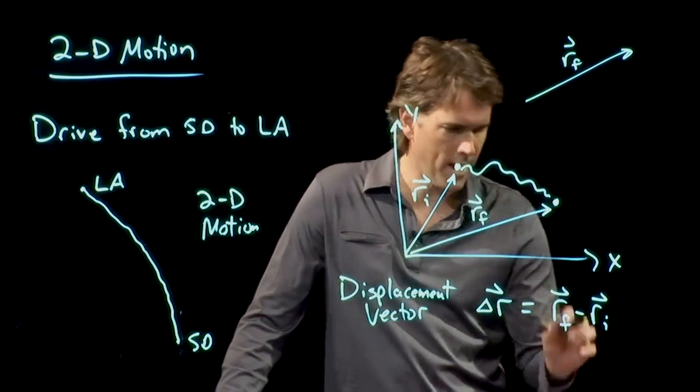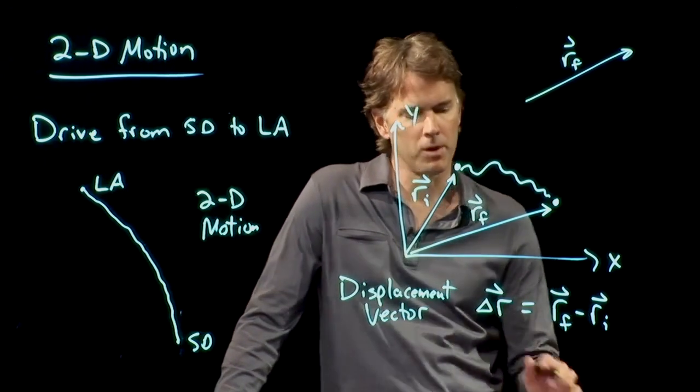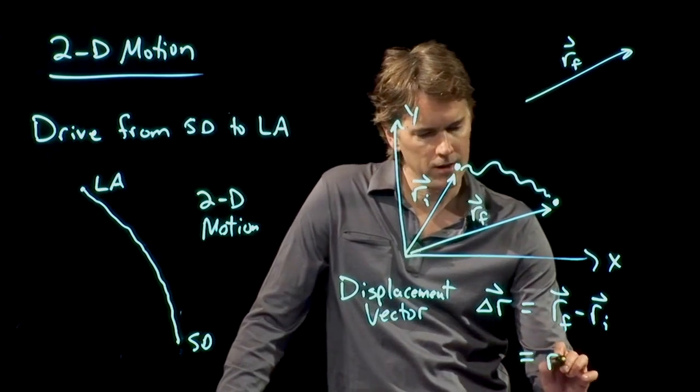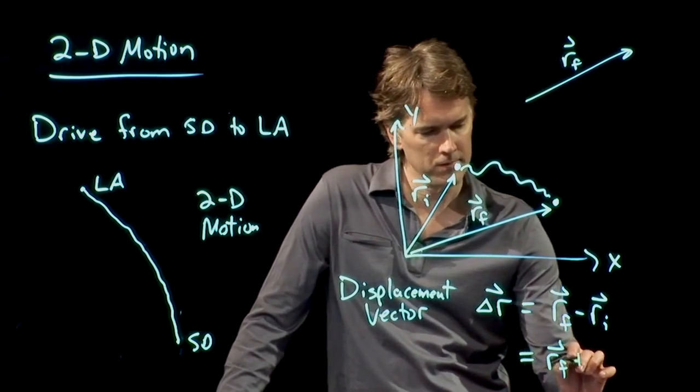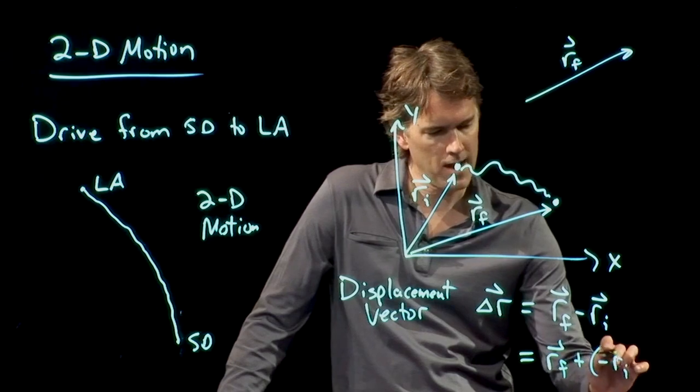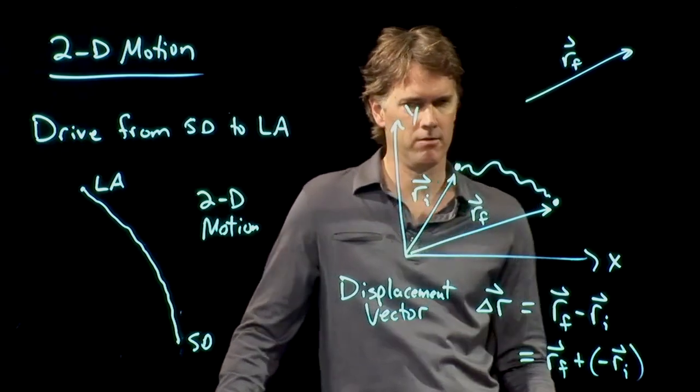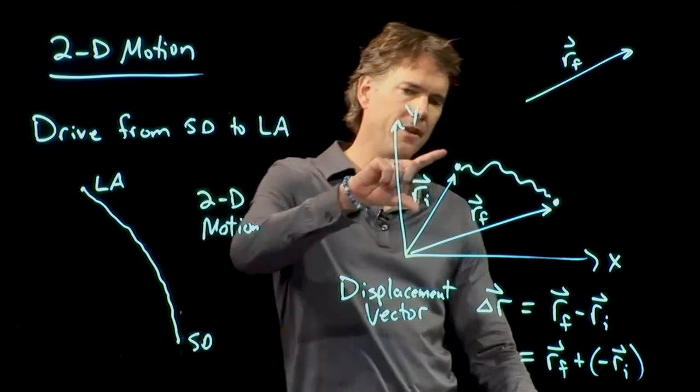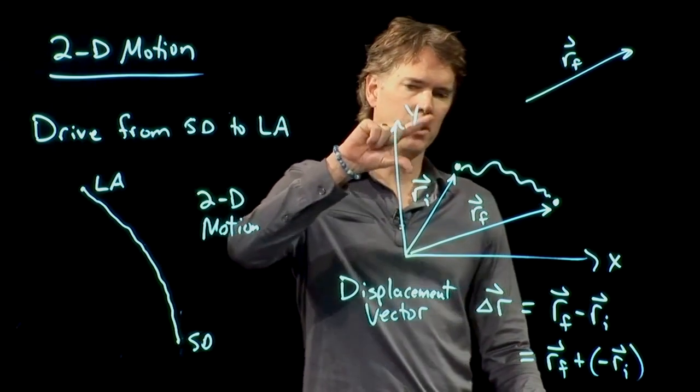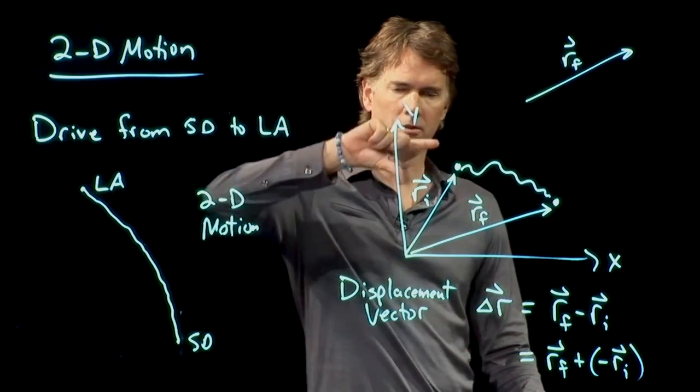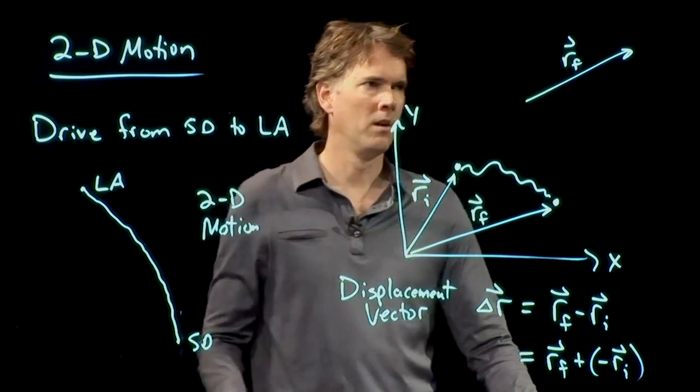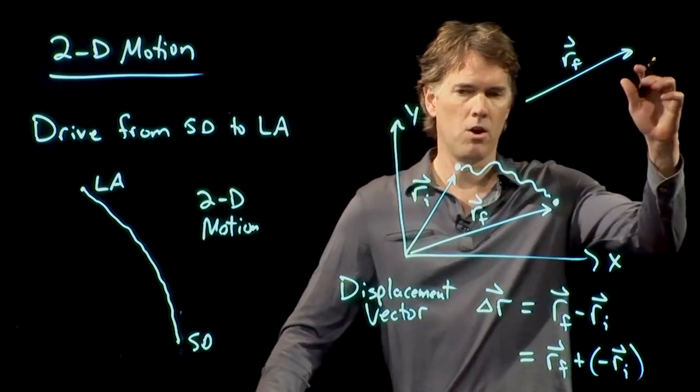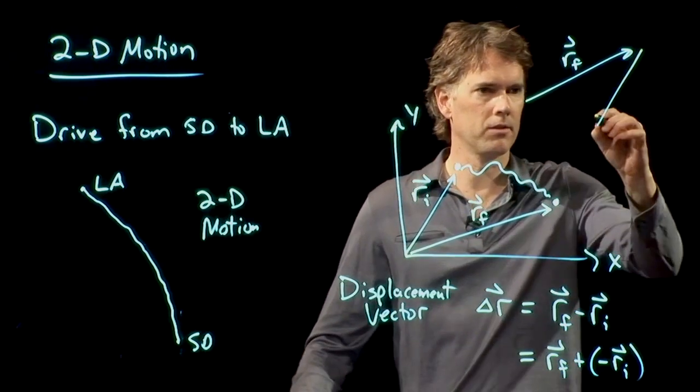But we're not adding them, we're subtracting them. What we know is that this is exactly the same as RF plus negative RI. And if this is RI, we can do the negative of that very easily. We just flip the direction of it. So, RF is there. RI is going to look like this.